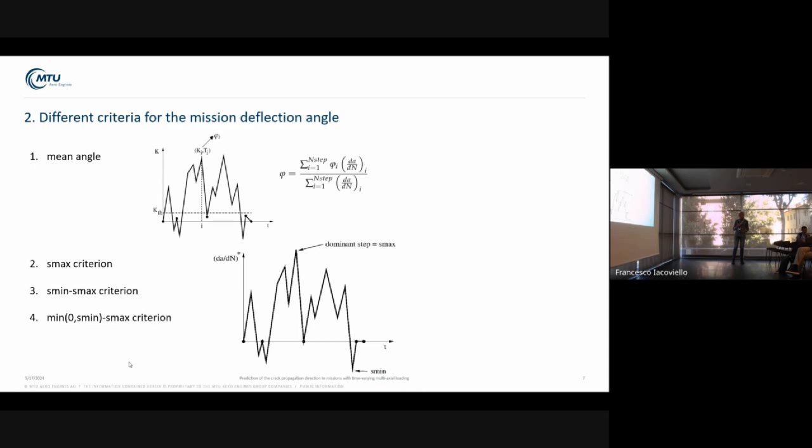The third criterion is the dS max dS min criterion. In this case, we extract the dominant cycle, not the dominant step, but the dominant cycle consisting of dS max and dS min. We look at the asymptotic stresses for these two steps and subtract them, and based on the difference, we calculate the deflection angle. The deflection angle of this dominant cycle is the deflection angle of the mission.